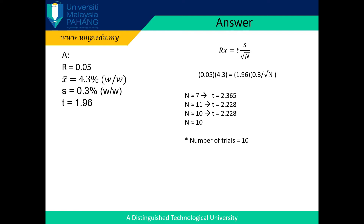The value of R should be 0.05, not in percentage. For this question, first we assume the number of trials is infinity. Thus, the value of T is 1.96 from the Student's T-table. Insert all the values into the equation, then you will get the number of trials N equal to 7.